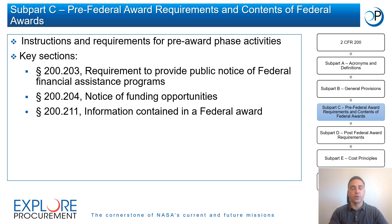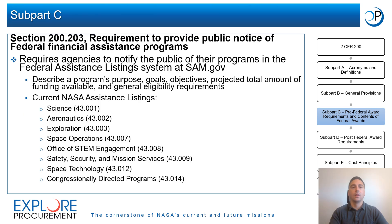Subpart C provides instructions and requirements for activities that take place during the pre-award phase of the award lifecycle, which is when agencies plan their programs, solicit applications, and issue their awards. Section 200.203 requires agencies to notify the public of their programs in the Federal Assistance Listing System, maintained by the U.S. General Services Administration at SAM.gov. Listings describe a program's purpose, goals, objectives, projected total funding, and general eligibility requirements.